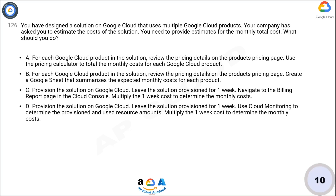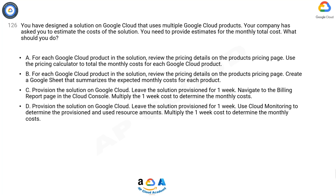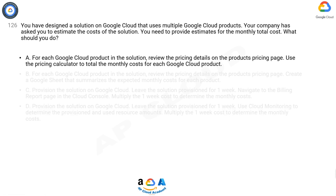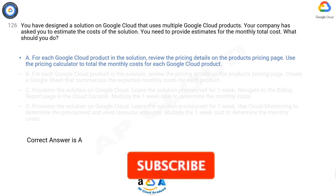Now take 10 seconds to think about the answer. The correct answer is A. For each Google Cloud product in the solution, review the pricing details on the product's pricing page. Use the pricing calculator to total the monthly costs for each Google Cloud product.